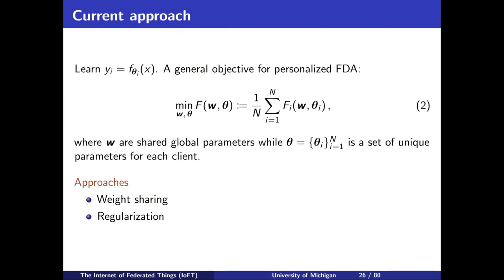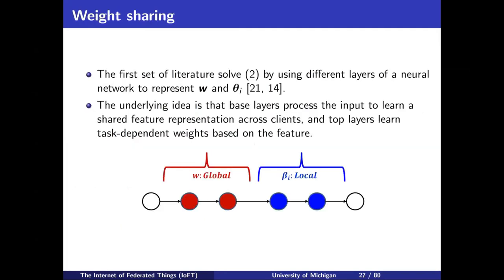The goal is to minimize a weighted objective to find a set of global parameters w and local parameters theta_i — the personalized parameters. Two approaches have been explored. The first is weight sharing, specific to neural networks: the first set of layers are shared layers, the last set are personalized layers. We all collaborate using averaging to learn the shared layers, and then each client learns their local layers. The other approach is a train-and-personalize approach: we learn a global model w*, collaborate to learn it, and then tell each client to start from w* and personalize — update w* given your own data but stay within some neighborhood of w*.